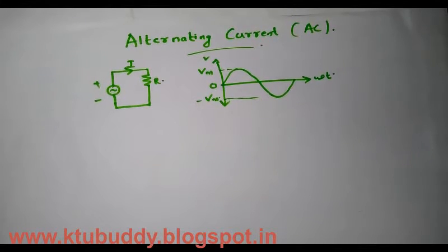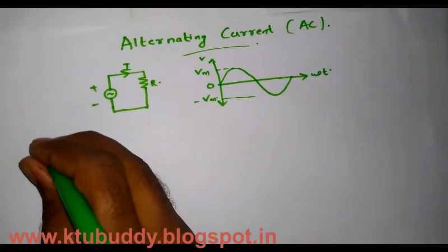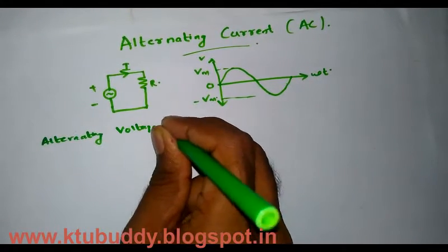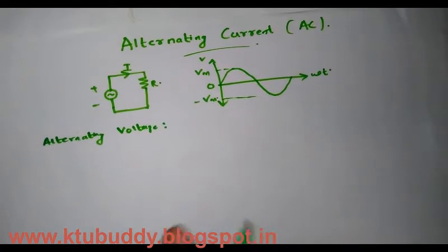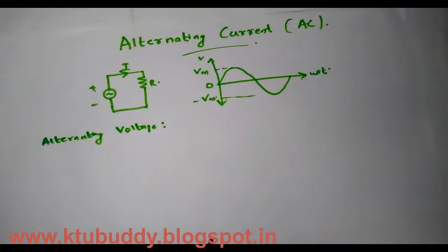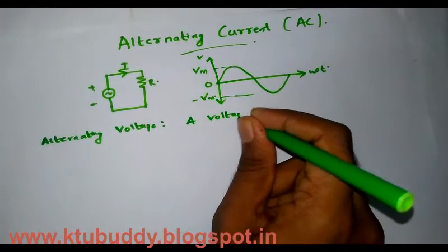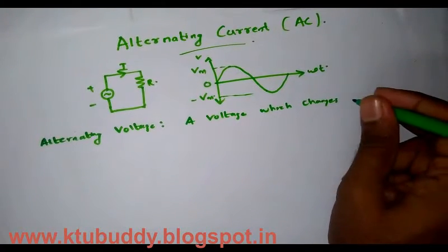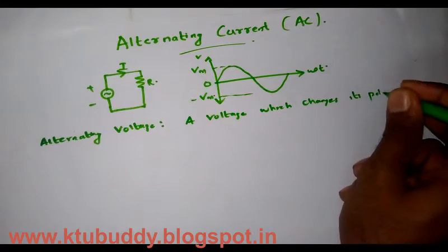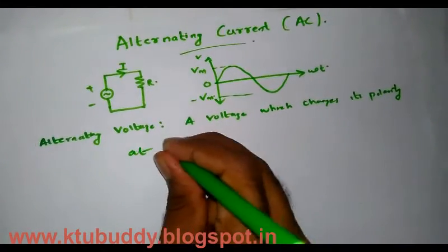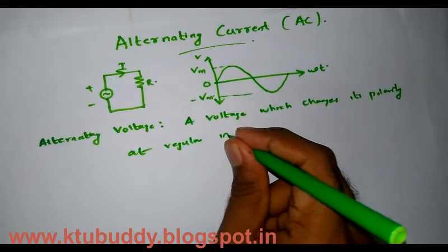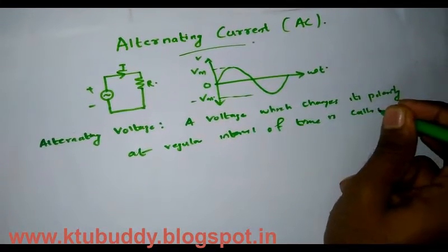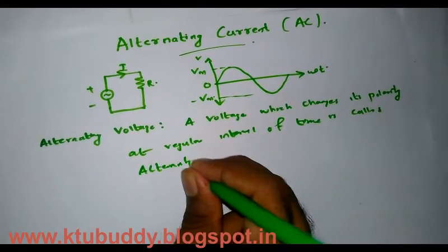So you have to go through two ideas: alternating voltage and alternating current. First one is alternating voltage. To alternate means to change at regular intervals. A voltage which changes its polarity — that is, its sign or direction — at regular intervals of time is called AC voltage or alternating voltage.